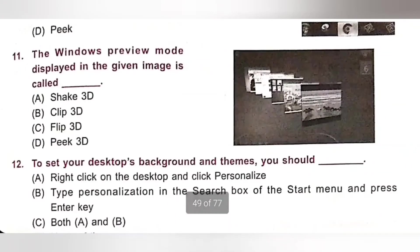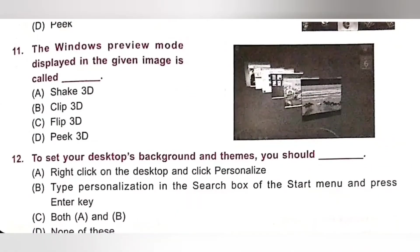Eleventh one: The Windows preview mode displayed in the given image is called dash. Option A: Shake 3D. Option B: Clip 3D. Option C: Flip 3D. Option D: Peak 3D. The Windows preview mode displayed is Flip 3D. Option C is the correct answer.